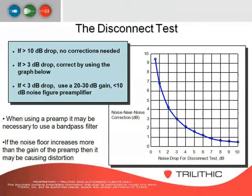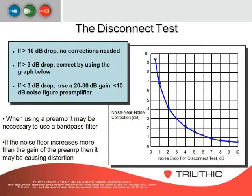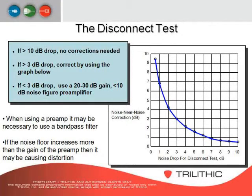For example, if the noise dropped by 10 dB — all the way to the far right of the scale — there's not much correction needed; the measurement will be within a half dB. If it dropped 5 dB, you need between 1 and 2 dB of correction. If it only dropped 1 dB, there's close to 7 dB of correction that has to be made. To get your noise floor further away from the analyzer noise floor, you can use a preamp, though sometimes a bandpass filter is also necessary.